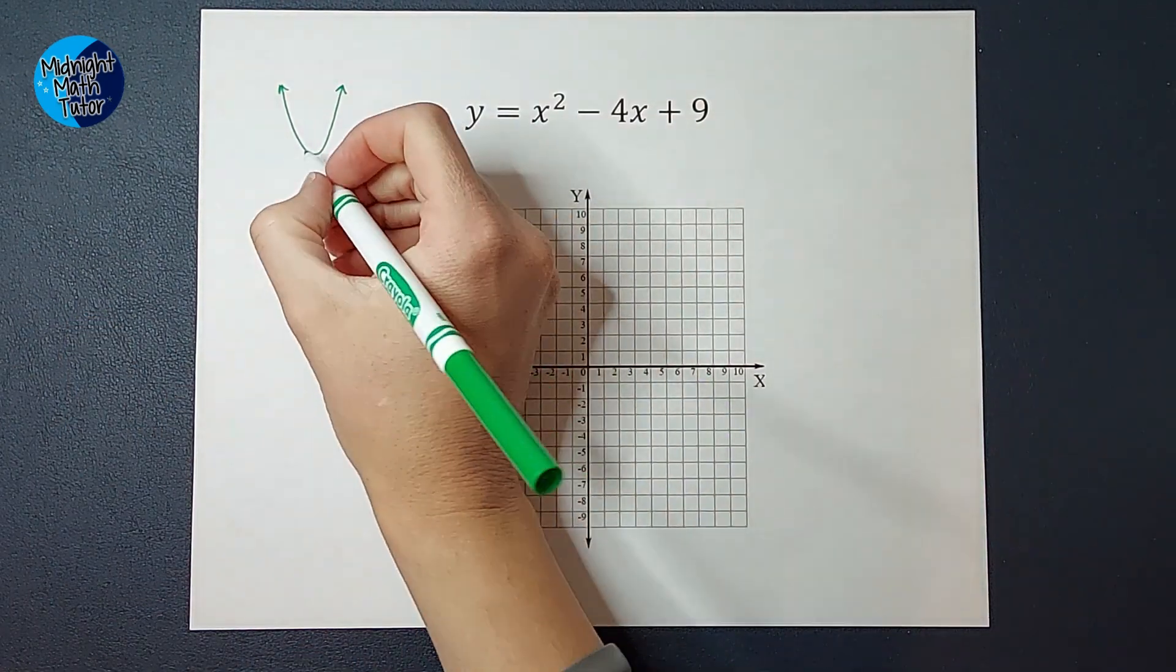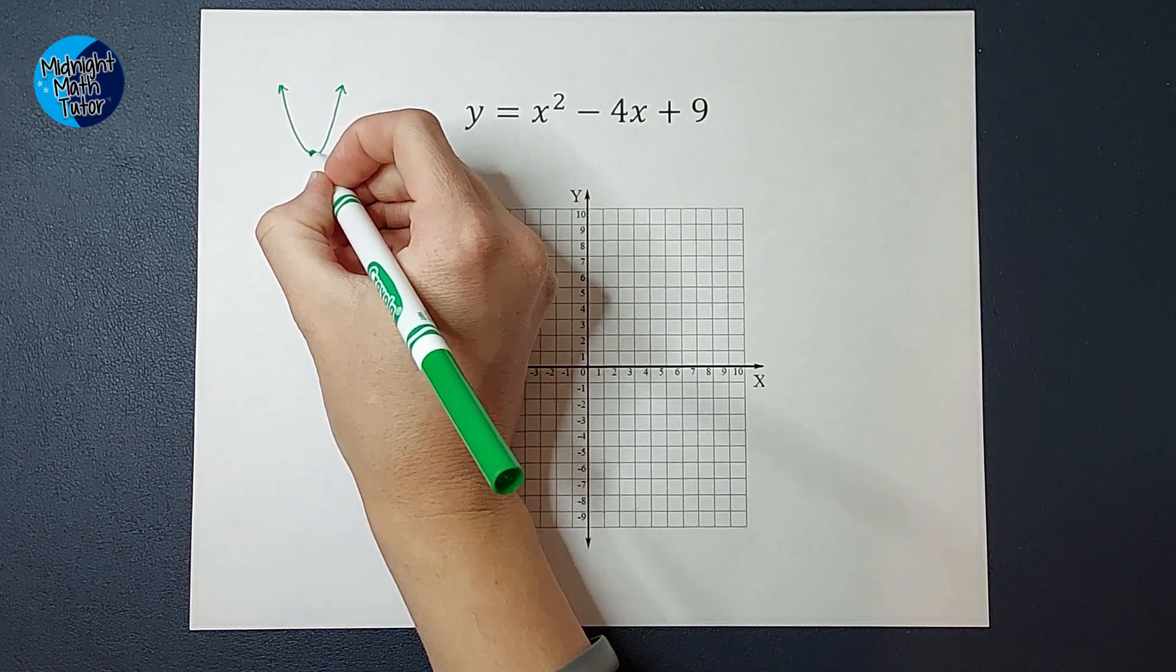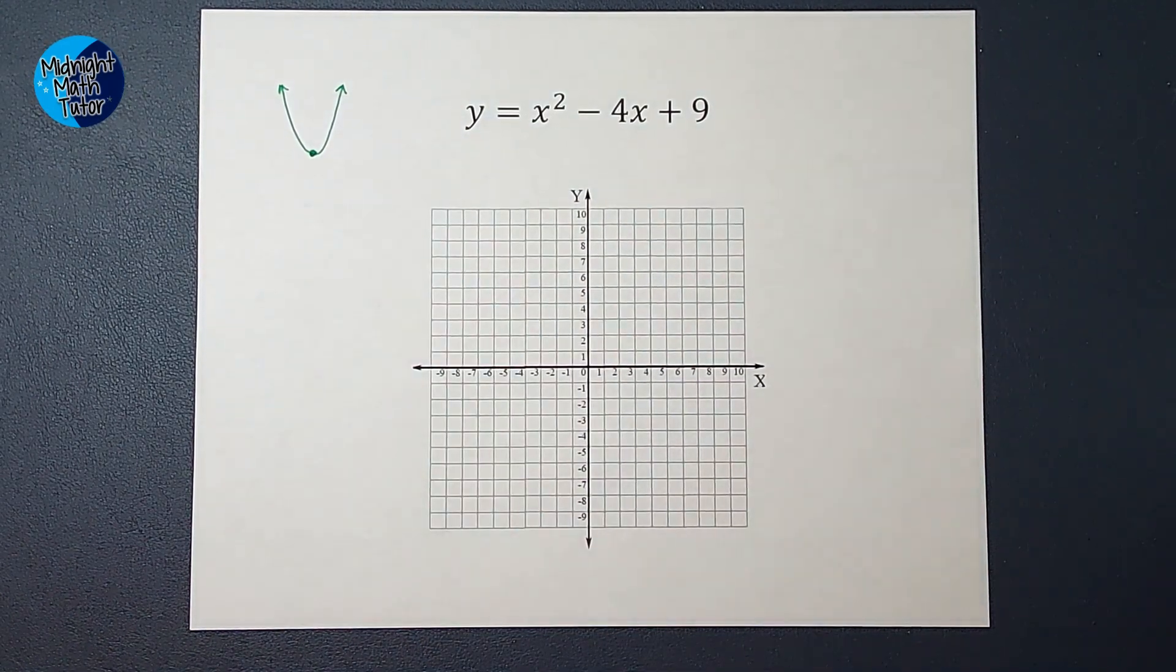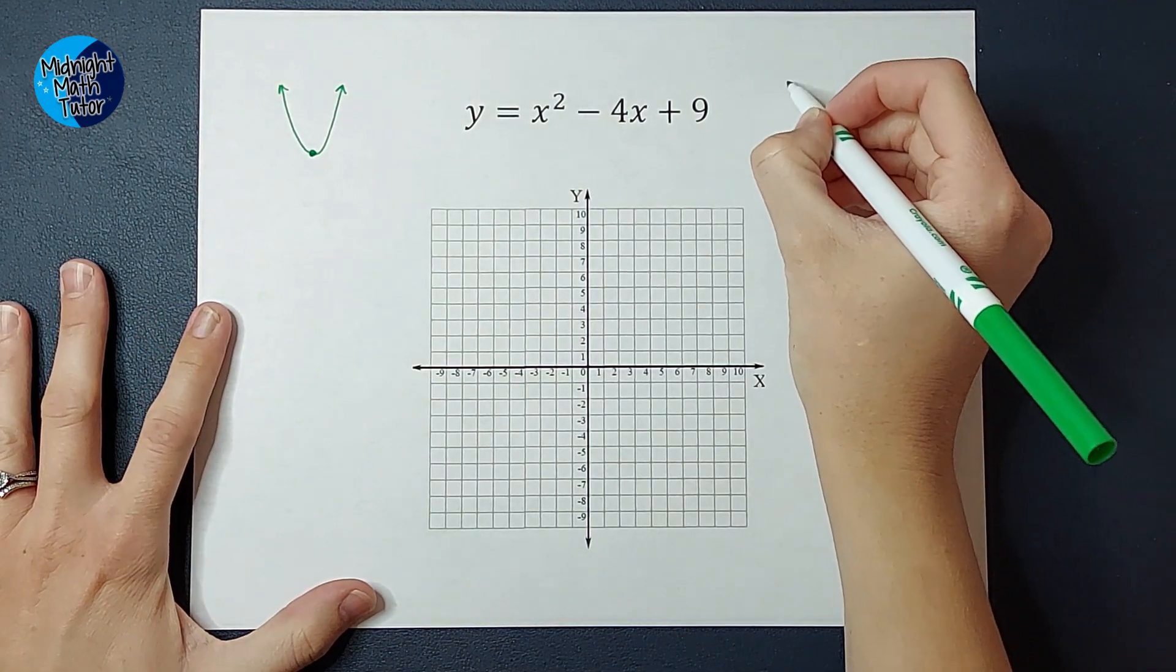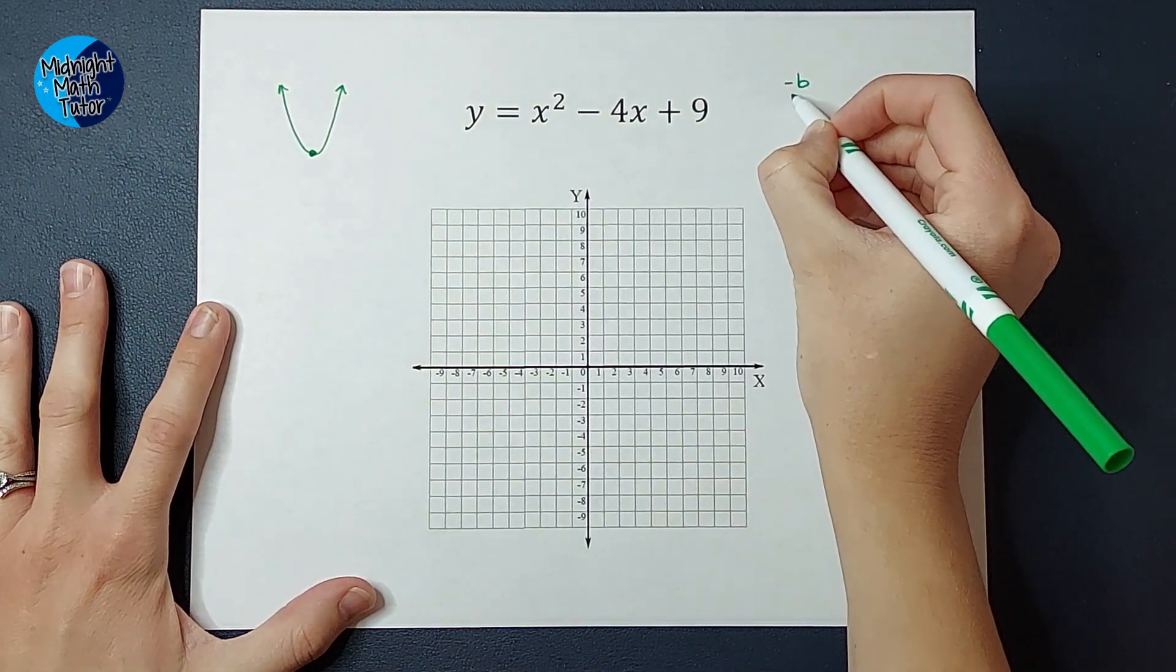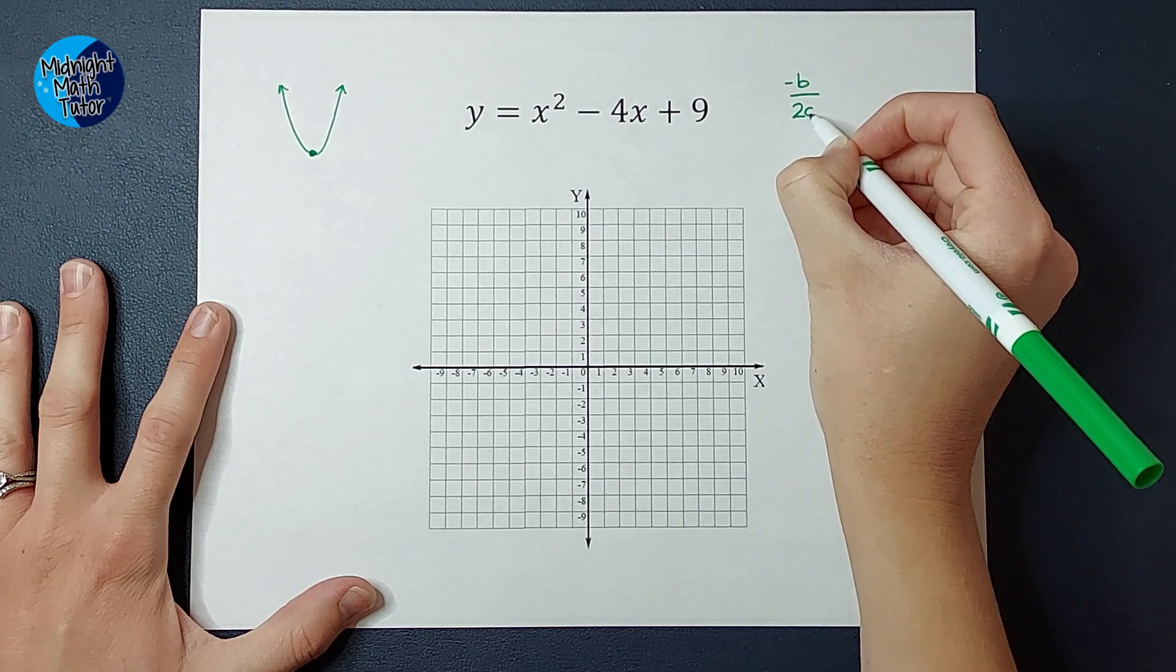I need to know where my vertex is. That's like the turning point. I need to know where that is. When we are in standard form, the x value of my vertex is going to be negative b over 2a.